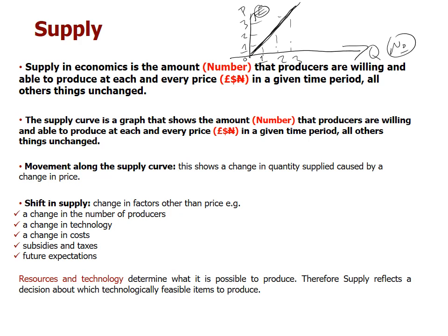You can also have a shift in supply. If this is supply curve one, we can have a second supply curve. The change from supply curve one to supply curve two has nothing to do with price. For example, when the price is two pounds, the quantity has moved to three — but this wasn't caused by price; it's caused by other factors.